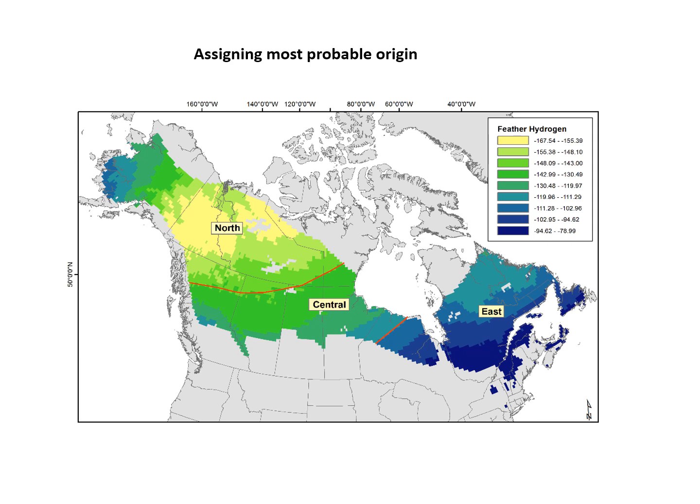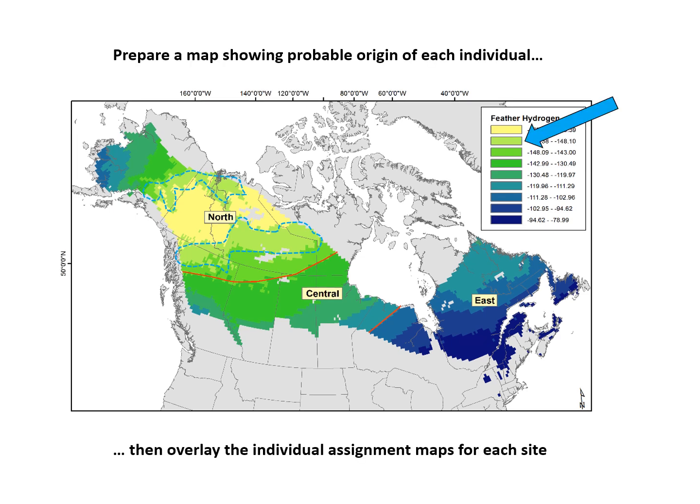The birds from west of the Great Lakes — that area is not easily divided into distinct zones, so we divided it somewhat arbitrarily by a red line, which is basically a latitudinal division. Say you have one individual bird whose isotope signature is the light green indicated by the blue arrow in the legend.